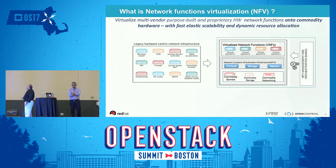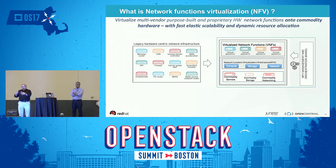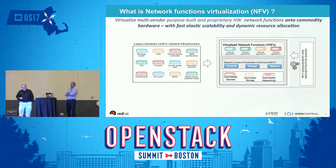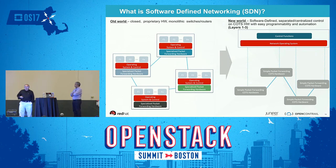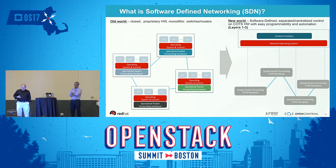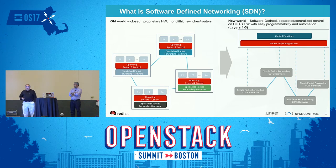NFV is the concept of virtualizing multi-vendor purpose-built hardware into software network functions — virtualized network functions on commodity hardware with fast elasticity, scalability, and dynamic resource allocation, which is really cloud computing. SDN is about separating and centralizing control on commodity-based hardware, making it easily programmable and automated — layers 1, 2, 3. SDN helps NFV, and they tend to complement each other.